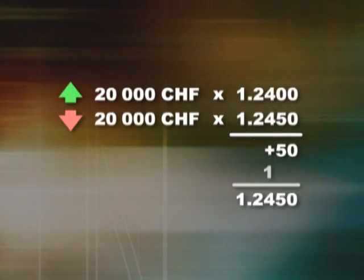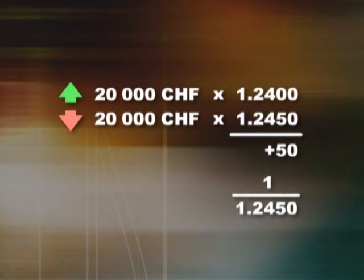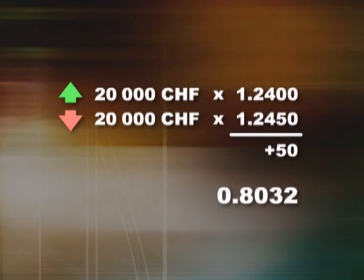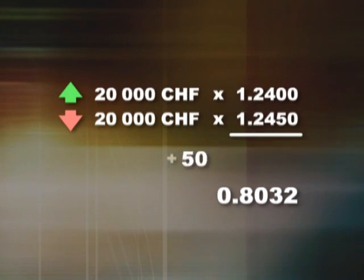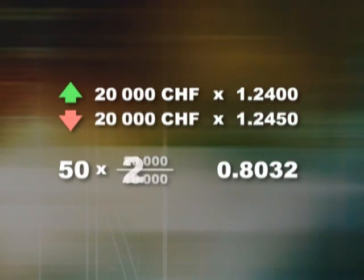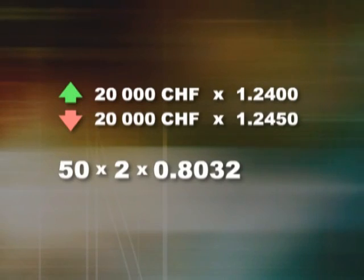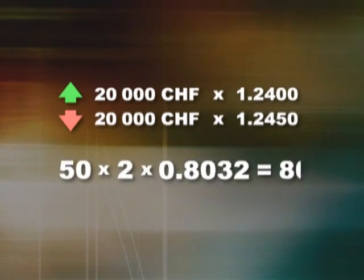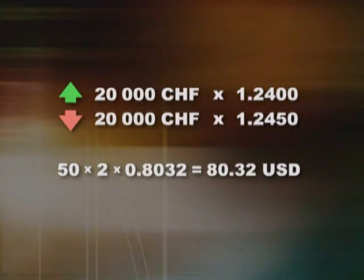Divide 1 by 1.2450 and we get $0.8032 dollars for each point. The total is $80.32 cents — that's your earnings.